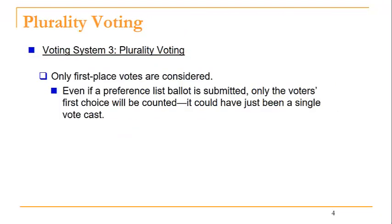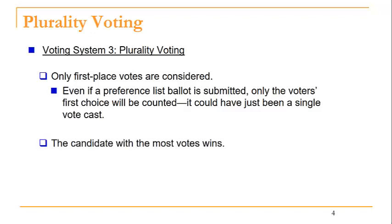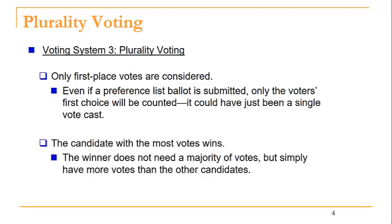In plurality voting, only the first place votes are considered. So even if a preference list ballot is submitted — remember, that's a list showing a voter's first choice, second choice, third choice, on down — only the voter's first choice will be counted. It could have just been a single vote cast. This plurality idea is familiar to us; that's how we elect our leaders in this country. The candidate with the most votes wins. Note that the winner does not need a majority of the votes, but simply to have more votes than the other candidates.